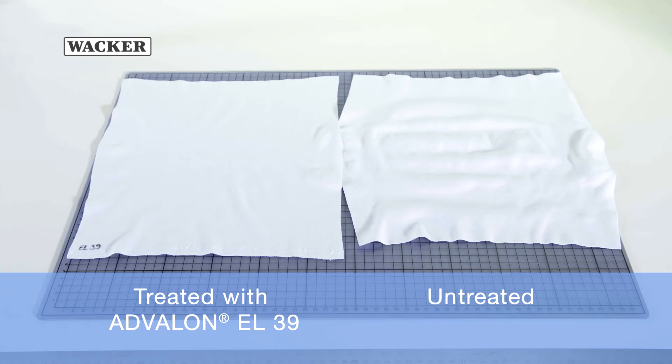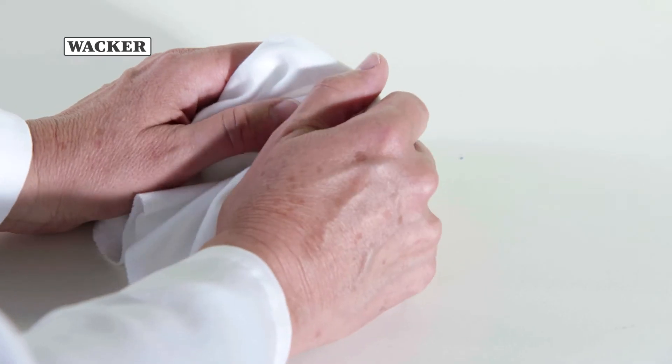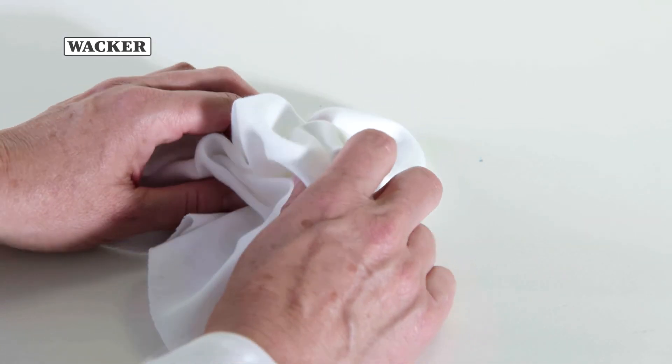Fabrics treated with Advolon EL39 are discernibly more flexible and elastic. This makes textiles noticeably softer.